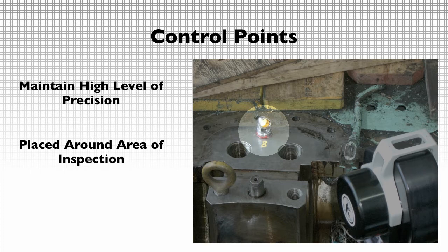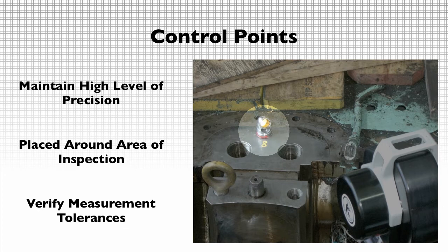Upon completion of inspecting the turbine, the measurement loop is closed by checking back into these original control points. This confirms that our degree of measurement error is within tolerance.